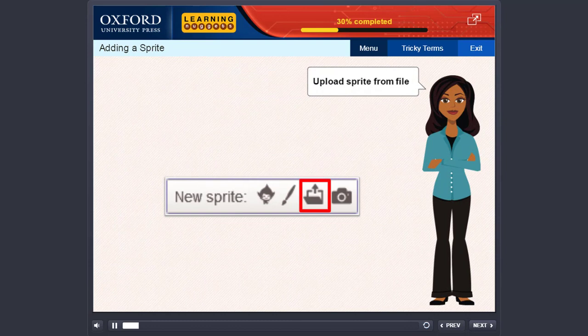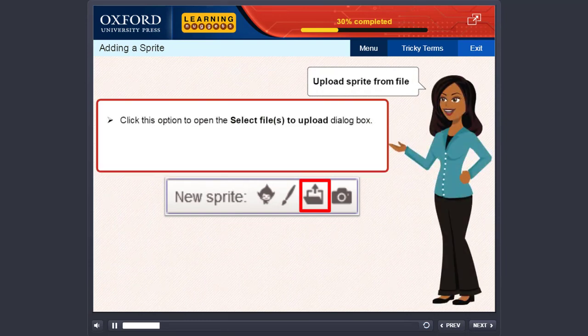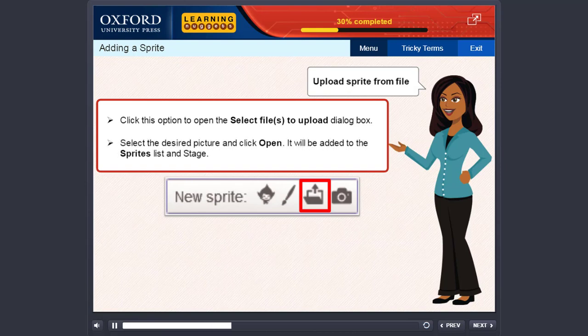Upload sprite from file. Click this option to open the select files to upload dialog box. Select the desired picture and click open. It will be added to the sprites list and stage.